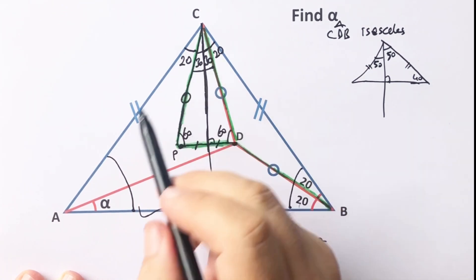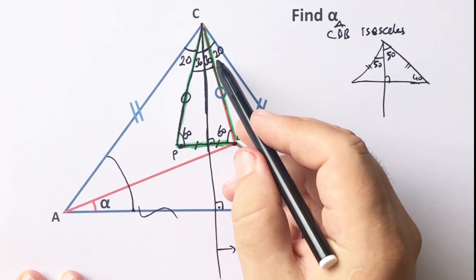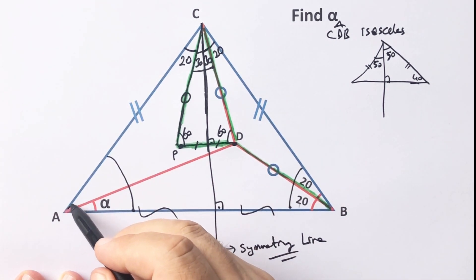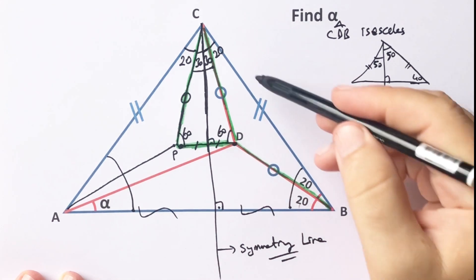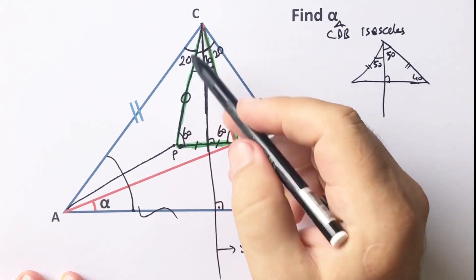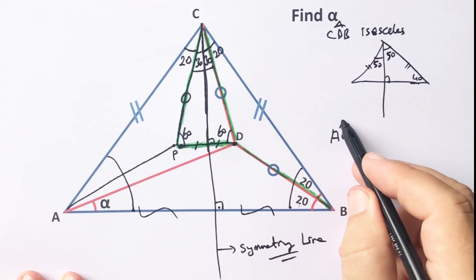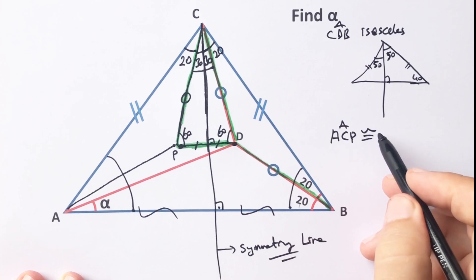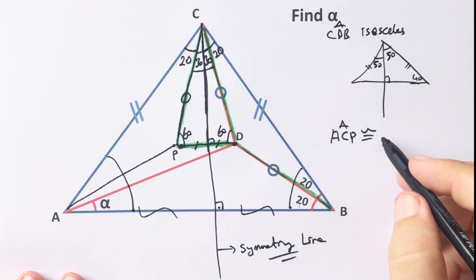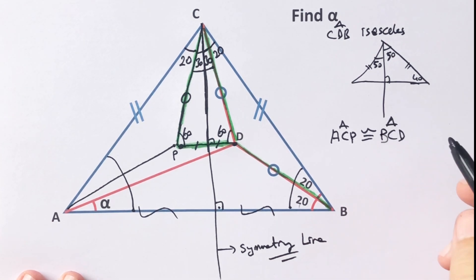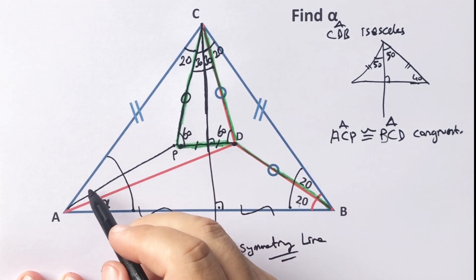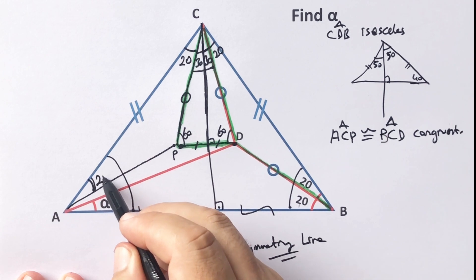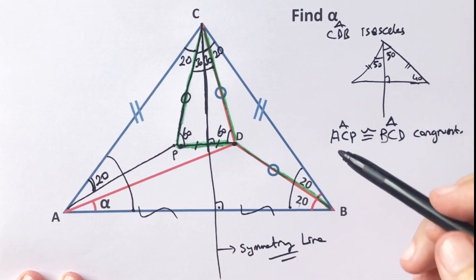Notice that double-line mark gives 20 degrees, and circle mark gives 20 degrees. That means if we connect points A and P, we get two congruent triangles: triangle ACP and triangle BCD are congruent. So we know that congruent triangles have the same sides and angles.